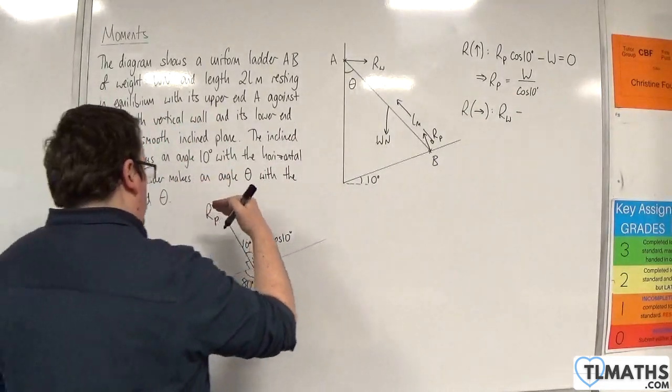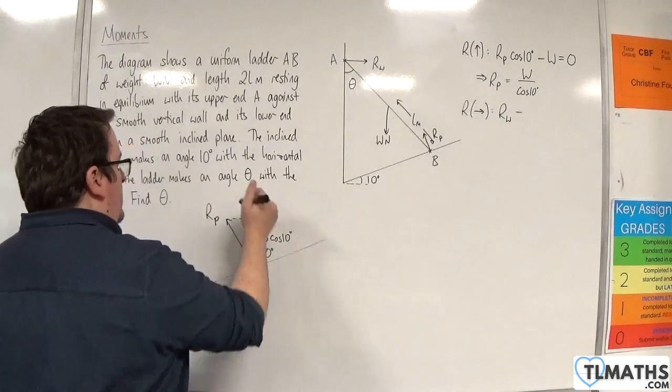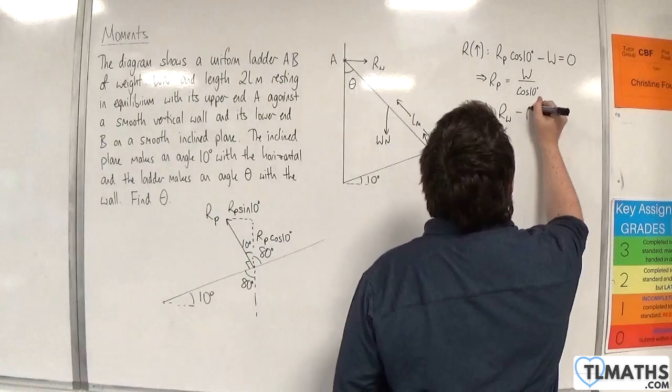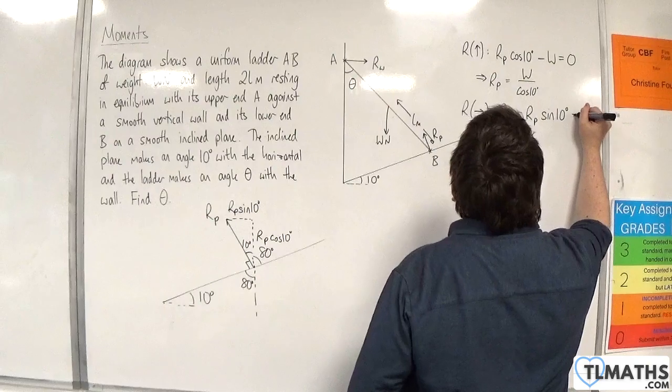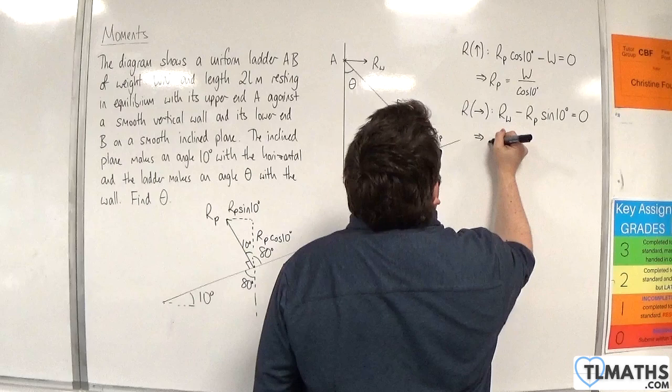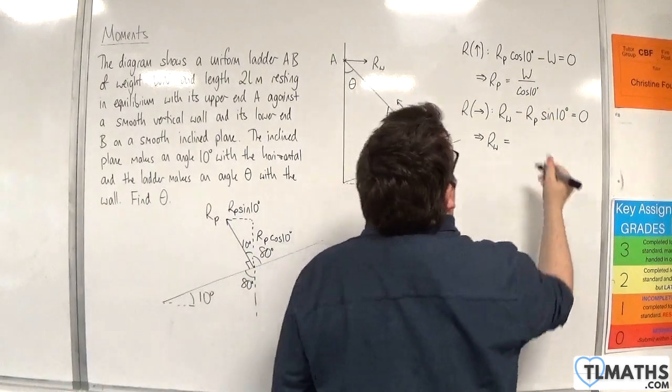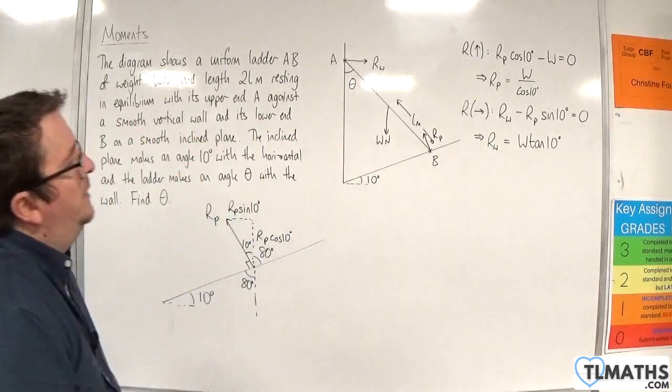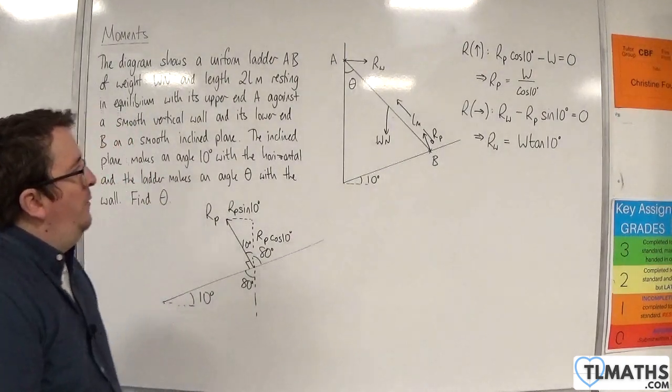So, take away RP sine of 10 degrees, and that's going to be equal to 0. So, RW is going to be this times sine of 10 degrees, which will be W tan of 10 degrees. And that's my RW force. So that seems to be going all right so far.